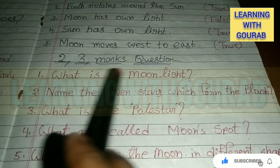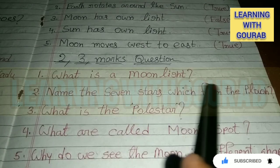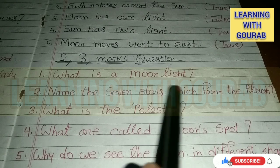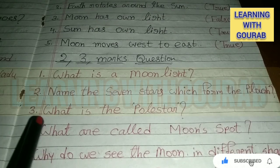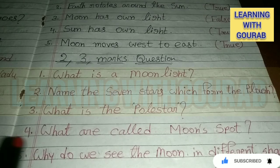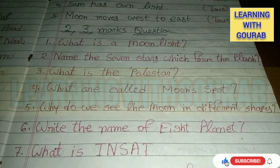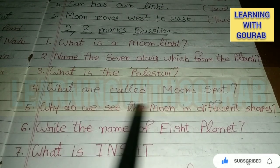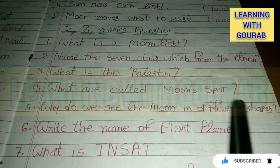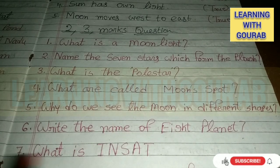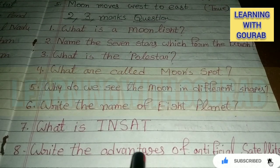Important questions: What is moonlight? Name the 7 stars which form the Plough. What is the Pole Star? What are moonspots? Why do we see the Moon in different shapes? Write the names of the 8 planets. What is INSAT? Write the advantages of artificial satellites.